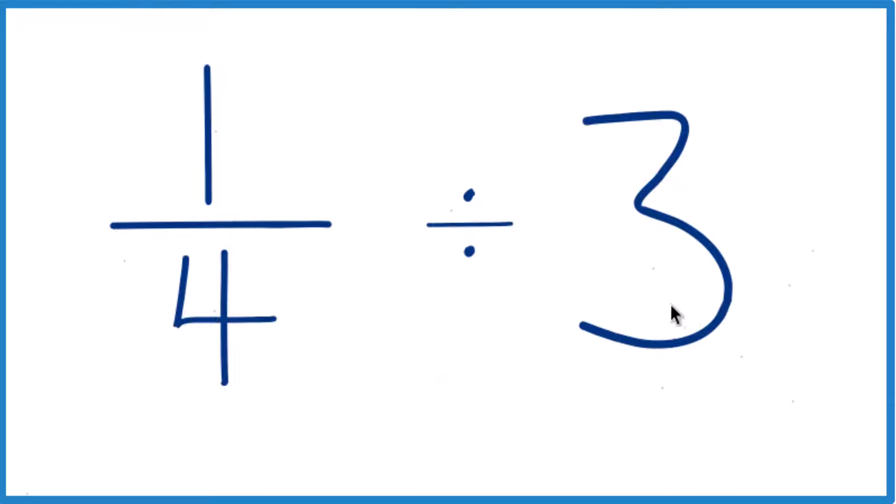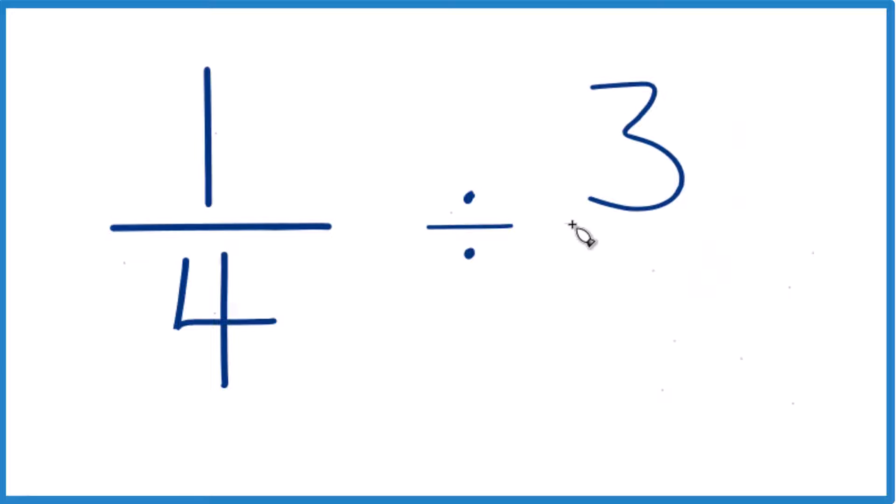Then let's take the three and make that three over one. Because three divided by one, it's still three, but now things line up kind of nice.